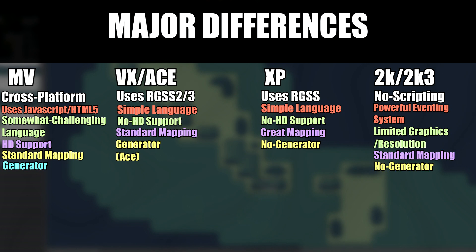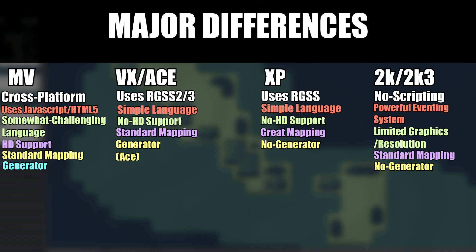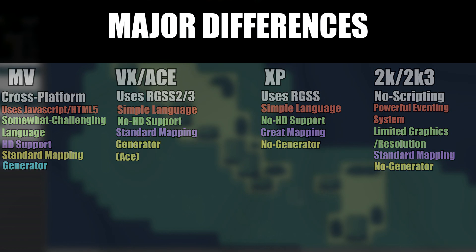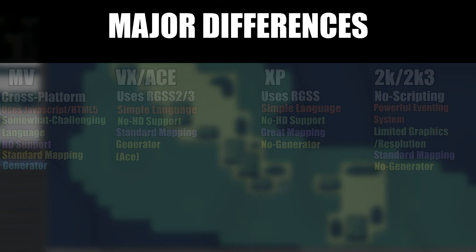RPG Maker XP does not have a character generator, however VX Ace and MV do — anything under VX Ace does not have a character generator. The character generators basically allow you to quickly create a character, which could be useful for people who are not artists but yet want at least a somewhat original character besides the ones they started with.